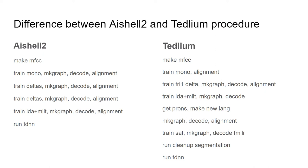Let's see the difference between the ASL2 and the Tetlium recipe. You can see that the Tetlium recipe is much more complicated since it contains a train set process and also a clean-up segmentation process. In the Tetlium process, we also discarded the RNN language model part, so both of them will end in the runTDNN.